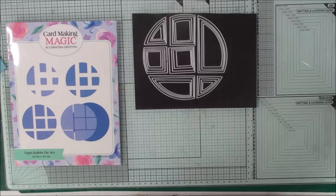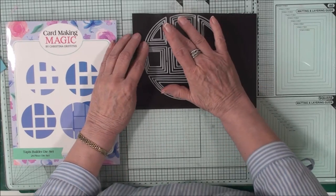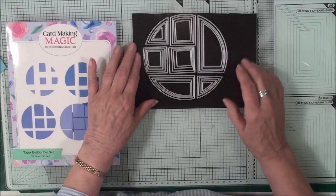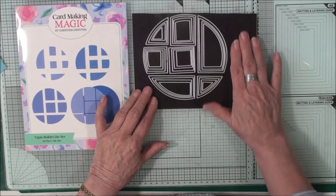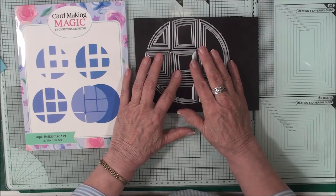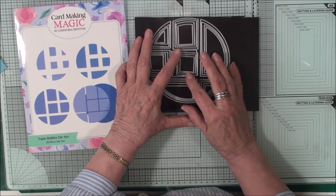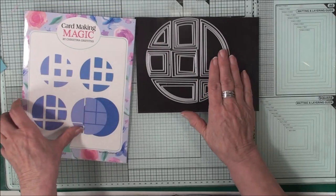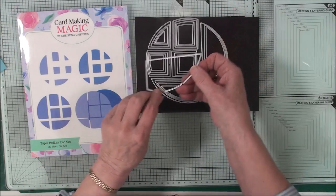The Tapis Builder dies won't come to you on a magnetic sheet, they will just come inside a cellophane bag inside the box. I've used a magnetic sheet and I have set my dies out in the pattern that it shows on the front of the box. Don't forget these are a mirror image of this because this is how it will cut.